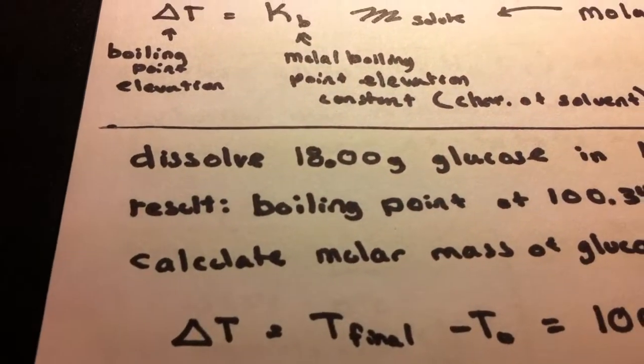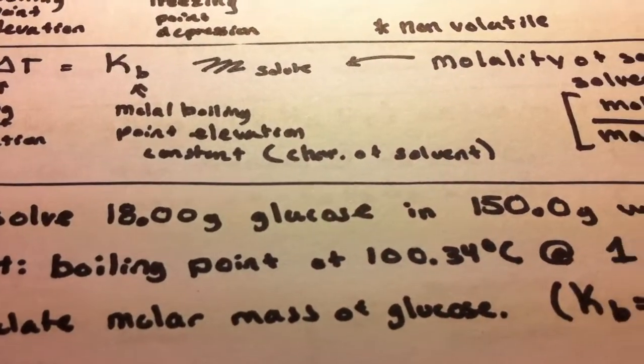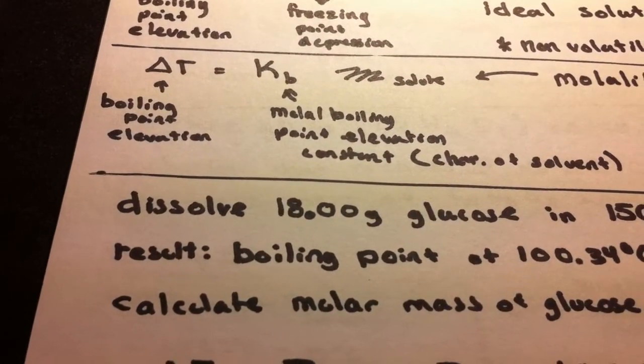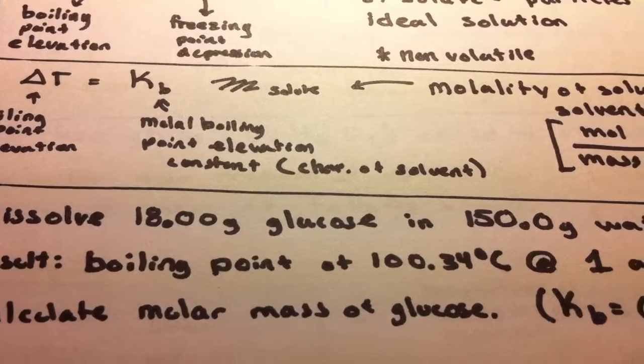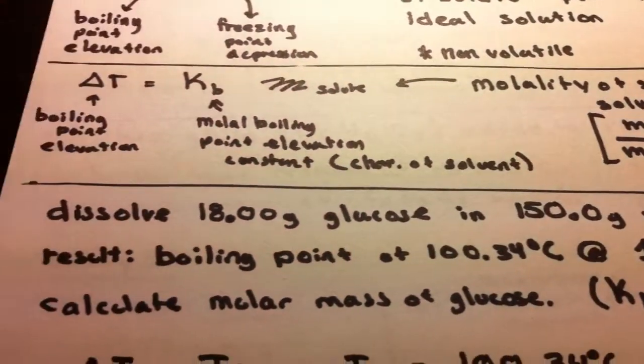So let's assume we have an example problem. We dissolve 18 grams of glucose in 150 grams of water. This results in a new boiling point, an elevated boiling point of 100.34 degrees Celsius at one atmospheric pressure.